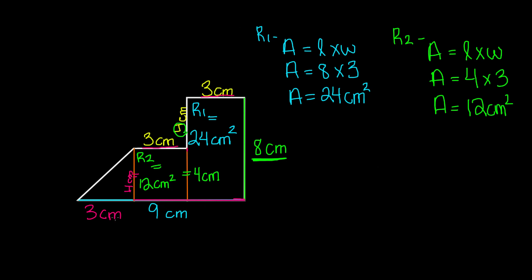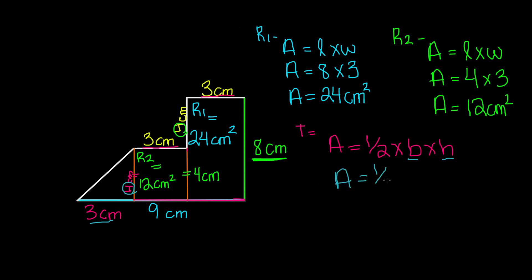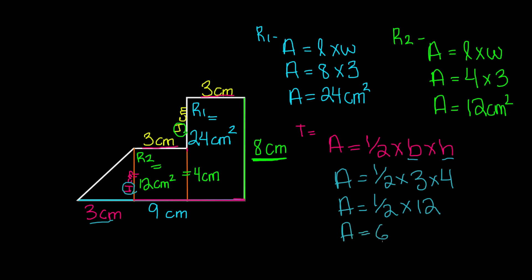Now let's find the area for this triangle. Since we know the base and the height, the area of a triangle is equal to 1 half times base times height. The base is 3 centimeters and the height is 4 centimeters. So 3 times 4 equals 12, and 12 times 1 half gives us 6 centimeters squared. So the area for this triangle is 6 centimeters squared.